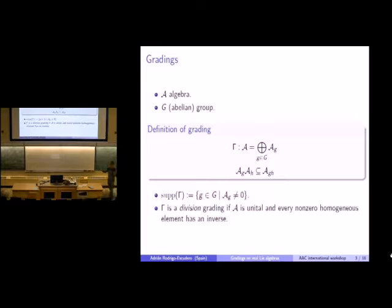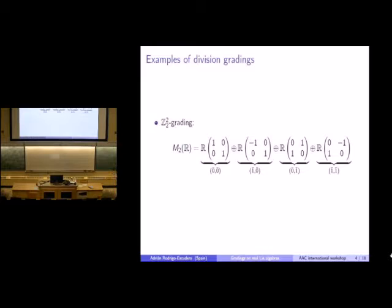Let's look at a couple of examples of division gradings. Consider the algebra of two by two real matrices, which is a four-dimensional real algebra, and decompose it as a sum of four vector subspaces with degrees in Z_2 squared. It is a straightforward computation to check that this is a grading—for example, multiplying these matrices yields the correct degree. This is also a division grading: not all two by two real matrices are invertible, but those in the homogeneous components are.